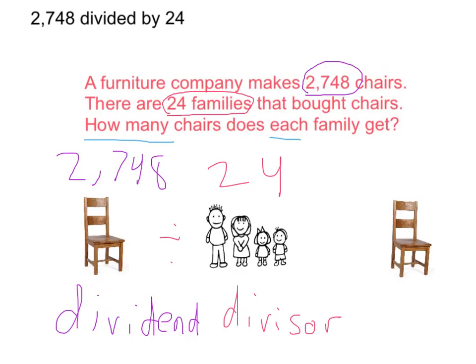So we're sharing our larger amount of chairs into groups of 24 families. Last, it says how many chairs does each family get? And that question, our answer will be our quotient. The quotient is also known as the answer to the division problem. And our quotient, we don't know until we do the math of the division problem.